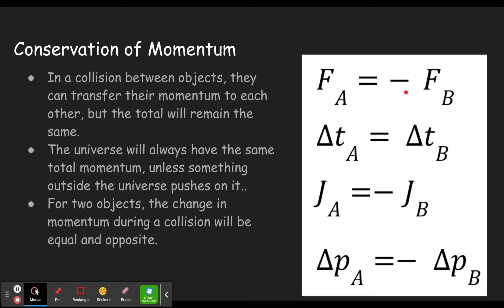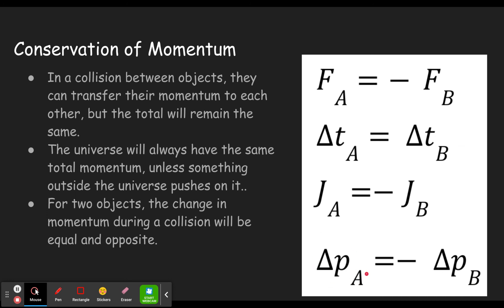So if the two things colliding are pushing equally on each other, and they must be touching for the same amount of time, they're putting the same force for the same amount of time on each other — with one being in the opposite direction. Since force times time gives us impulse, the impulse on A is equal and opposite to the impulse on B. Since impulse causes a change in momentum, if these impulses are equal and opposite, the changes in momentum are equal and opposite. If one changed five to the right and the other changed five to the left, the total change is zero — momentum has been conserved.